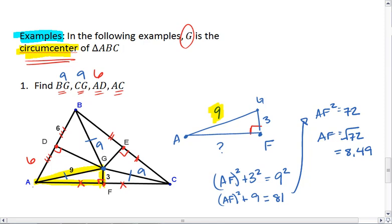So AF equals the square root of 72, which is approximately 8.49. But I wanted AC, so if this is 8.49 and this is 8.49, then AC is approximately 16.97, or 98, because we rounded. And that's the answer to example 1.